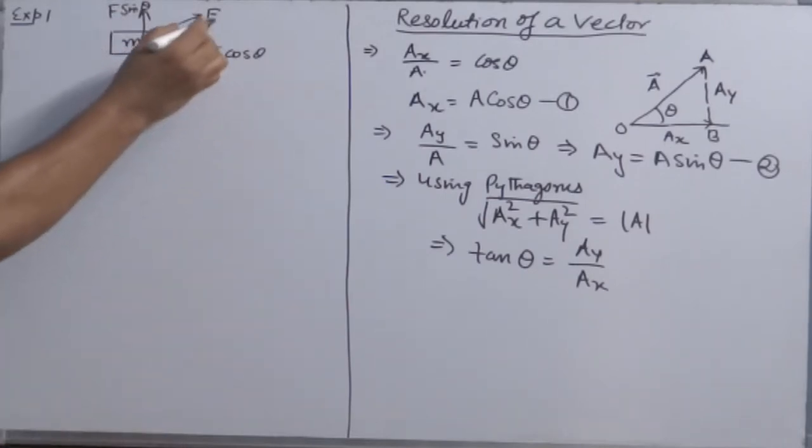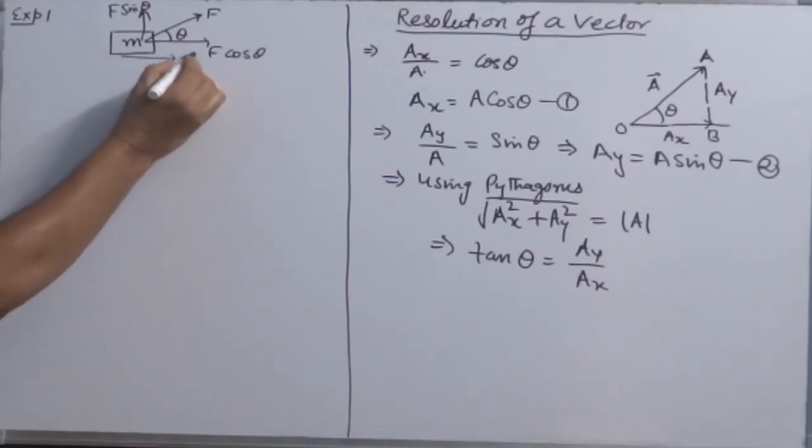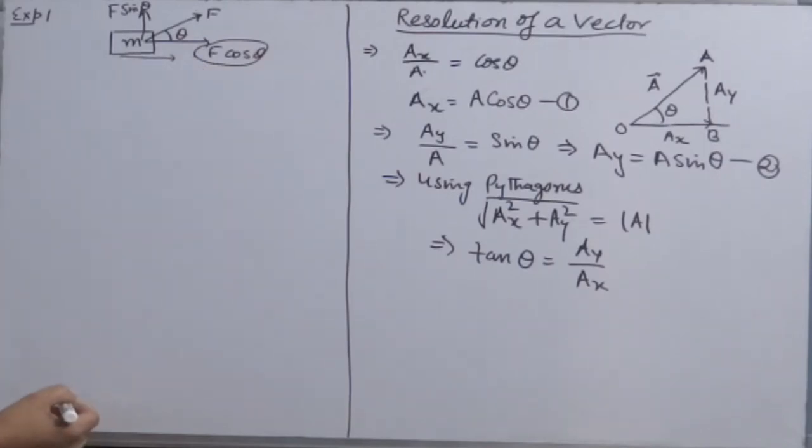So when you apply force F to move an object of mass M horizontally, only F cos theta part of the applied force is responsible to move it. F sin theta part has no role. Now, there is nothing confusion. Don't develop concept like this that along x-axis you will always have cosine component.